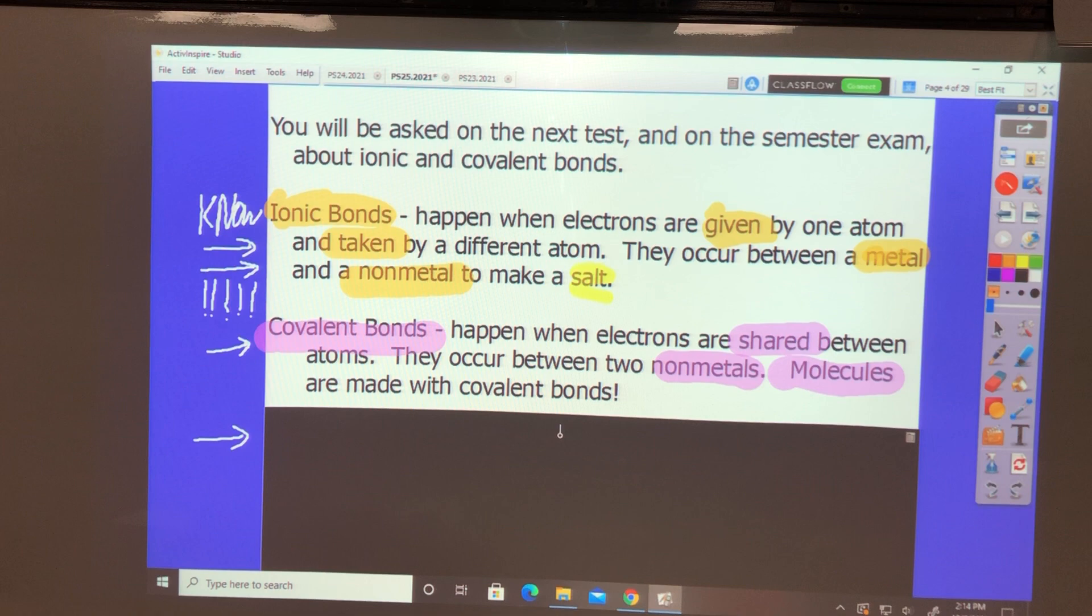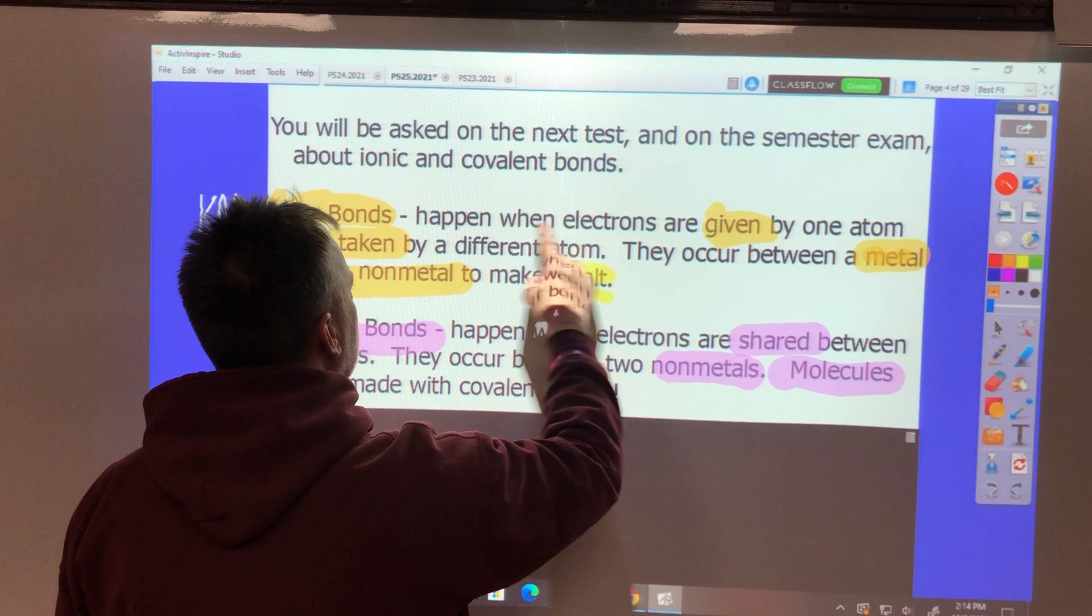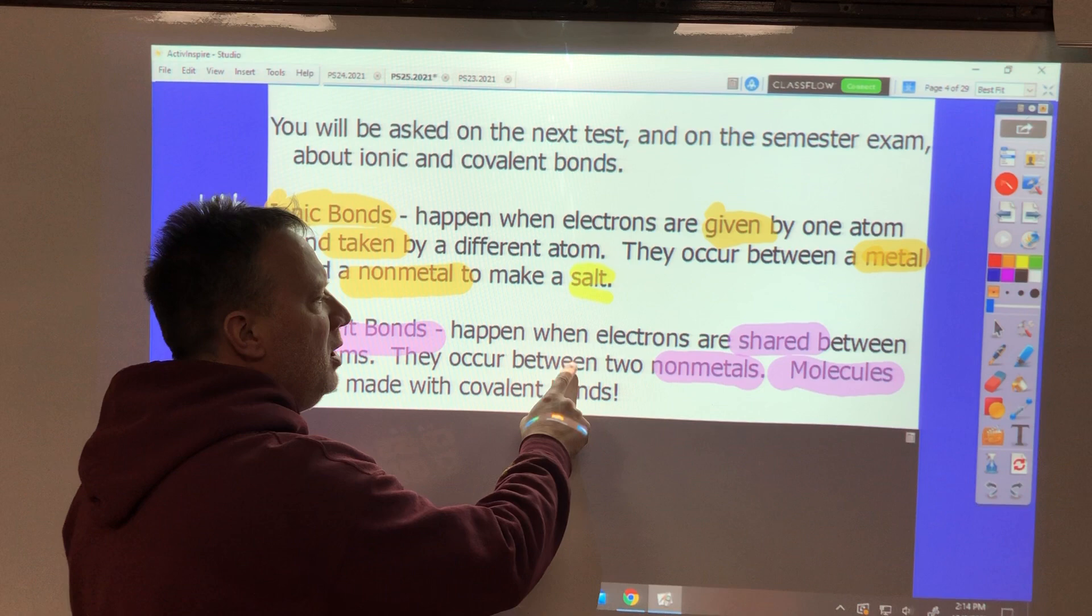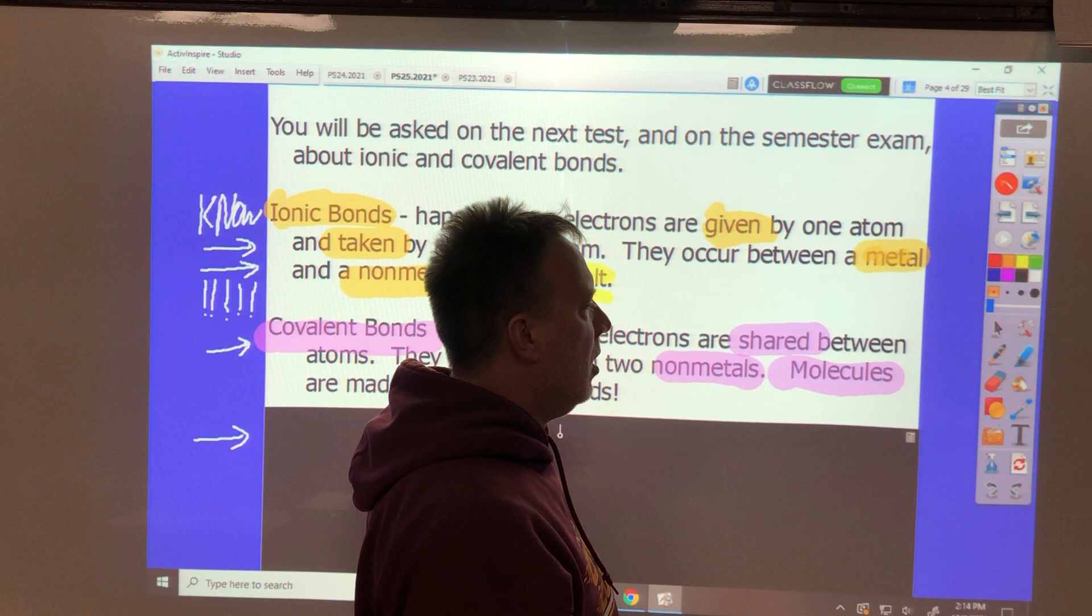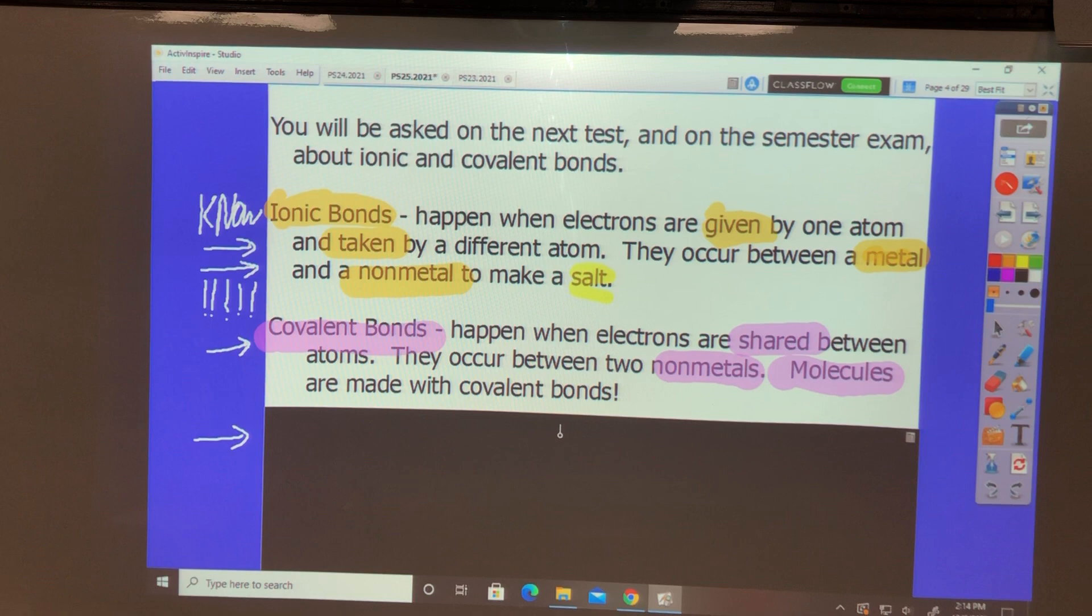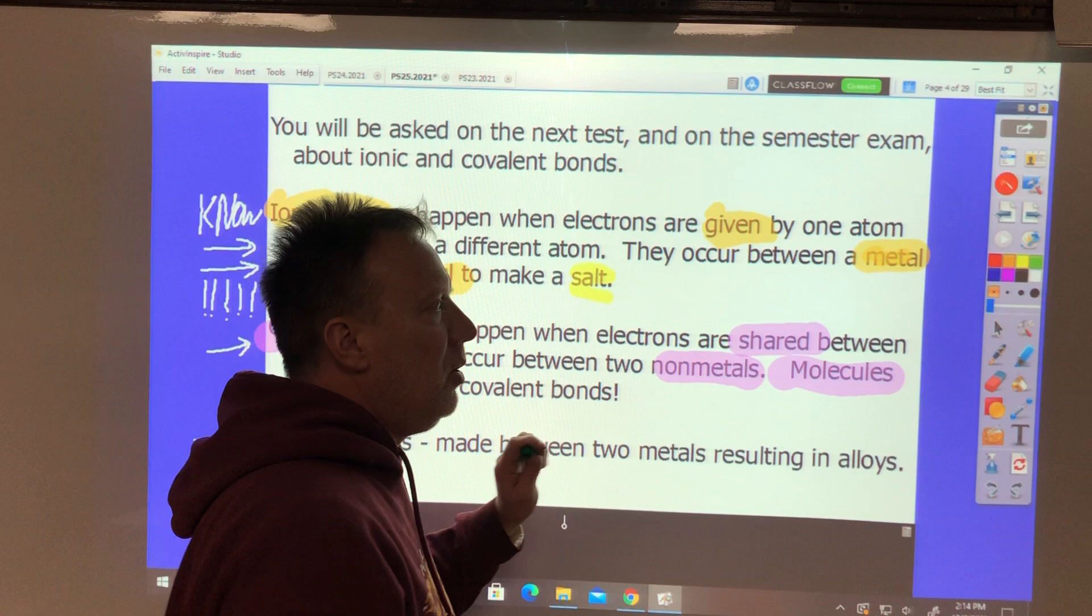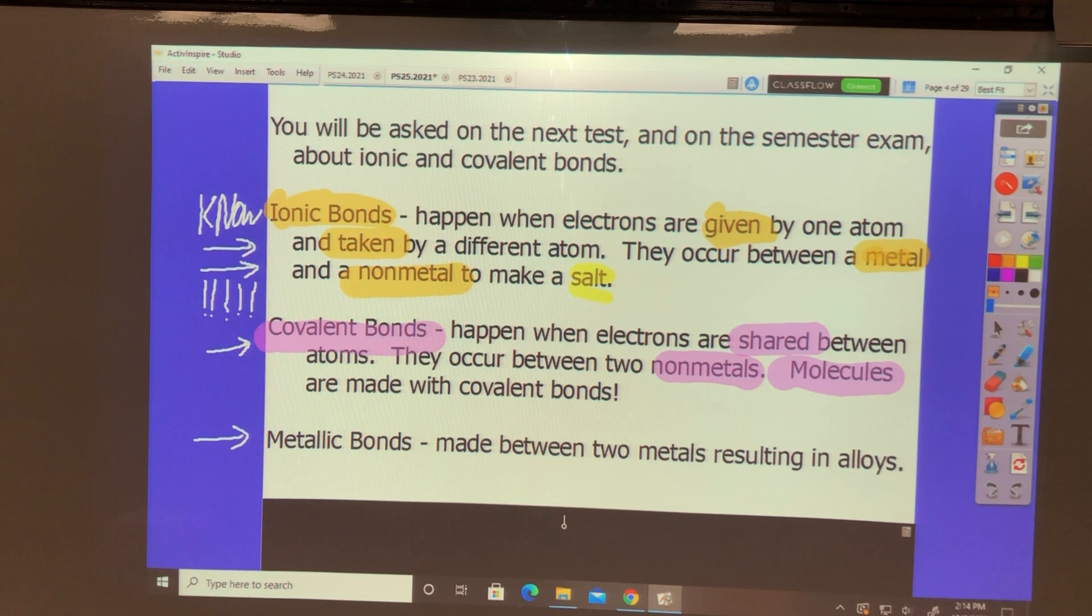Covalent bonds happen when electrons are shared. See the highlighting: ionic, give and take; covalent, shared. This occurs between two non-metals up in that corner, or maybe hydrogen and one of those in that corner. When you're done you get molecules. That's the only time you get molecules. And the other kind of bond is metallic bonding, made between two metals on this side resulting in an alloy like bronze or brass.